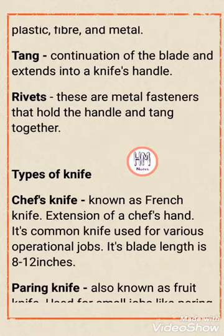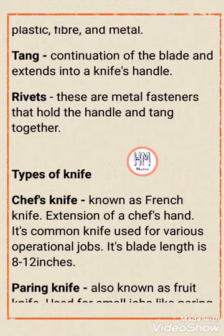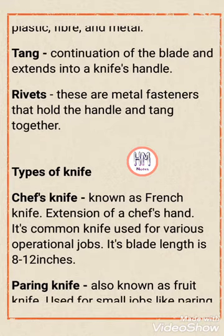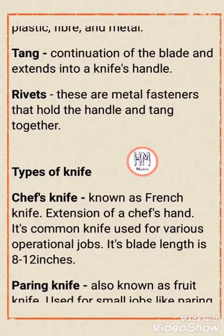Next one is the tang. The tang is the continuation of the blade that extends into the knife handle. It is the lower extension of the blade that goes into the handle and is covered with wood or metal. Next are the rivets — these are metal fasteners that hold the handle and the tang together.